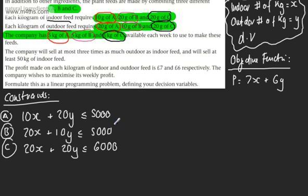The company will sell at most three times as much outdoor as indoor feed. So we can say 3x is greater or equal to y. Try some numeric values if it's not intuitive — after a while you can just read it and write it down.